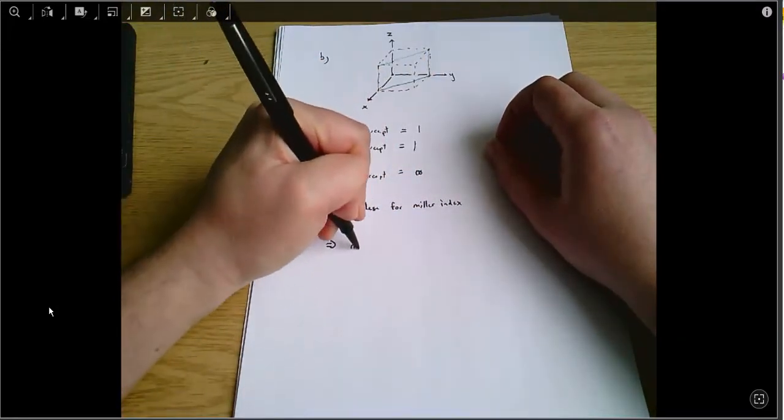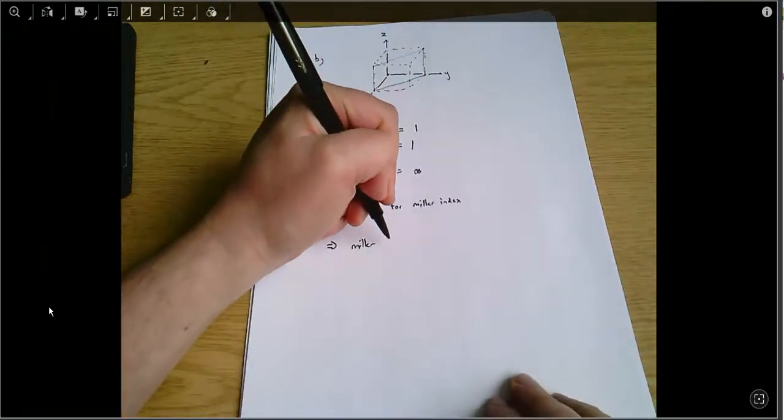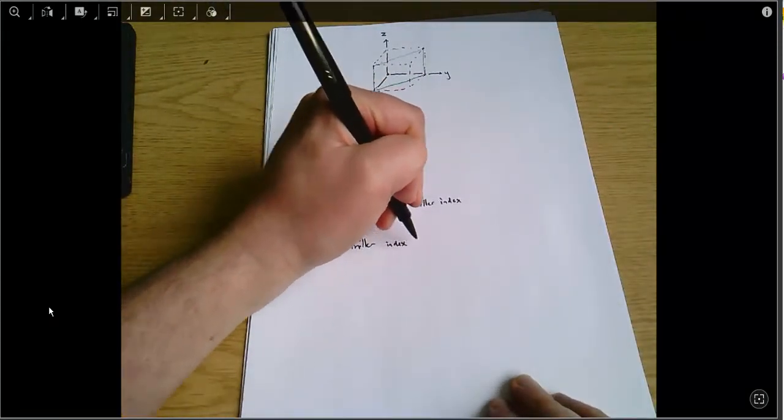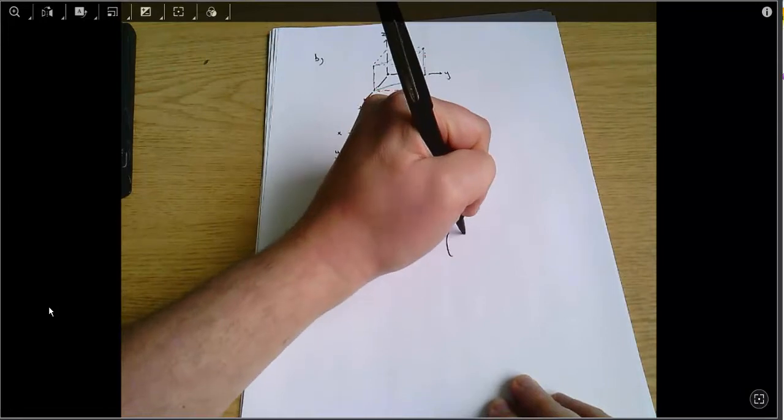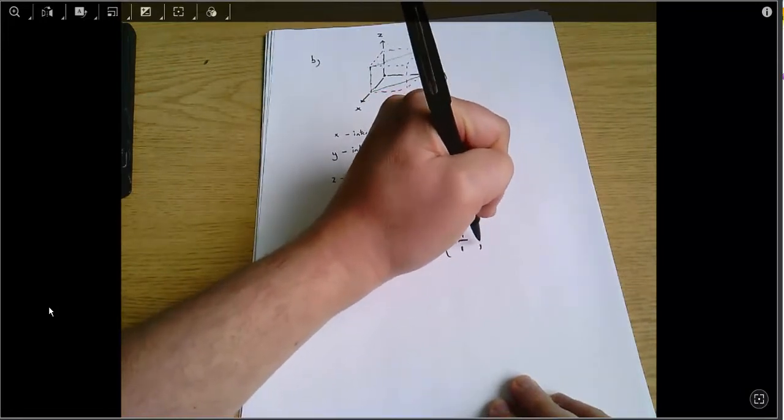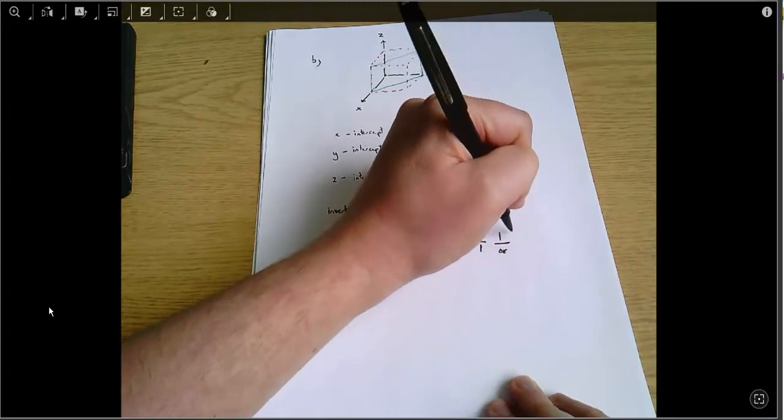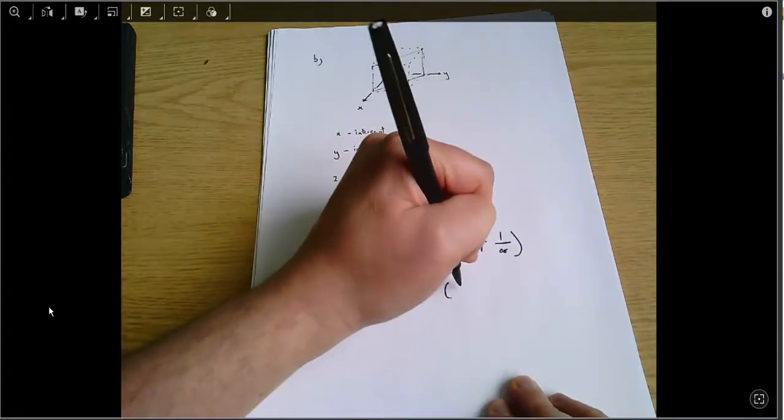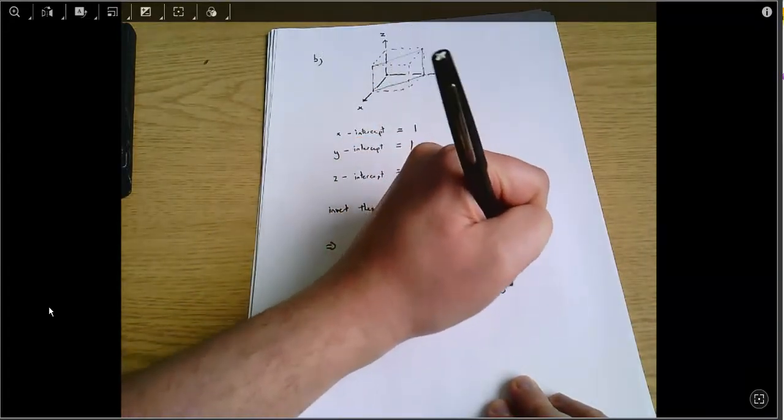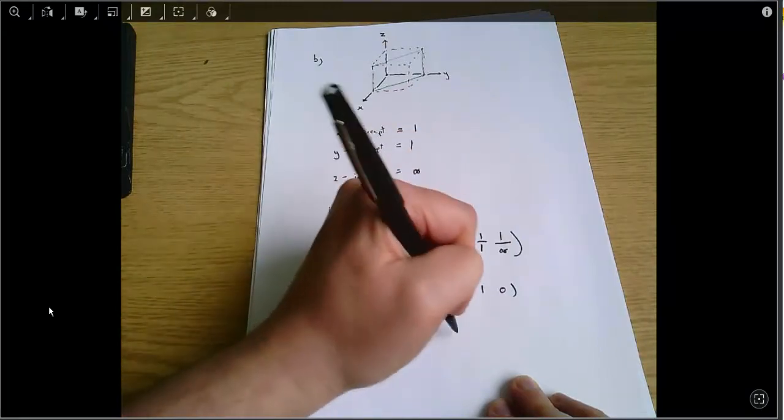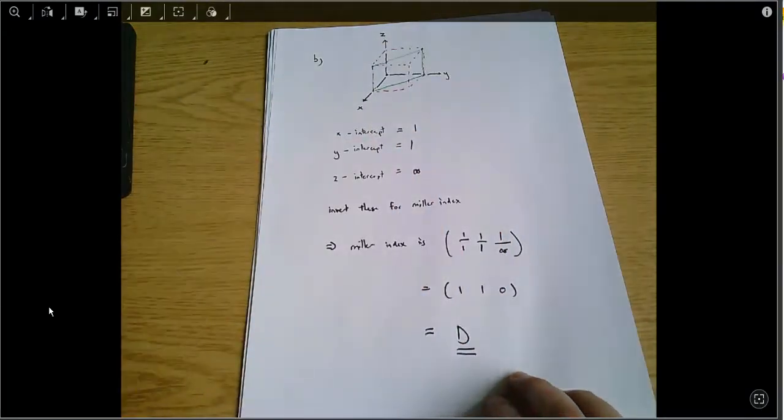And then we invert these for the Miller index. So the Miller index is one over one, one over one, one over infinity, which equals one, one, zero, which equals D, and that's the answer.